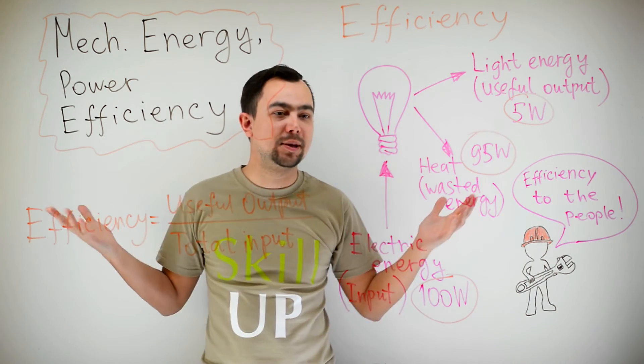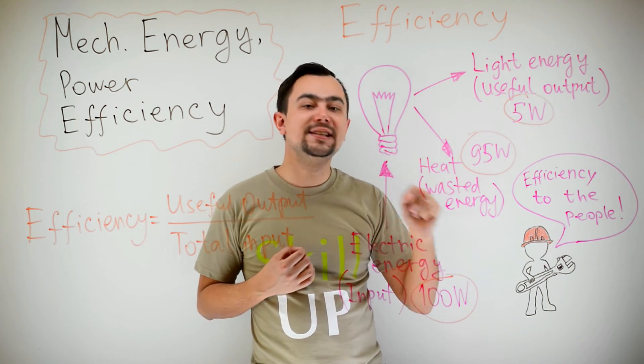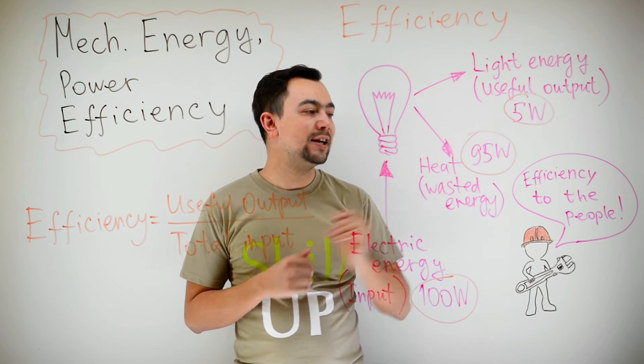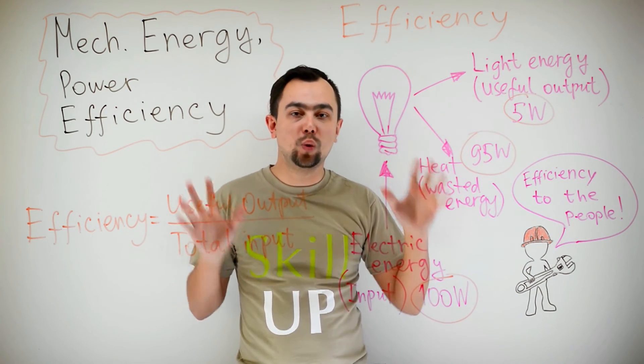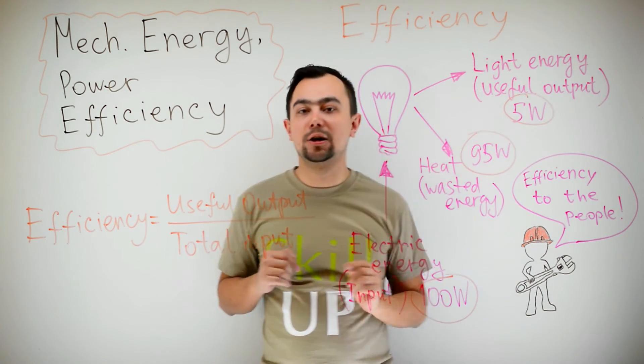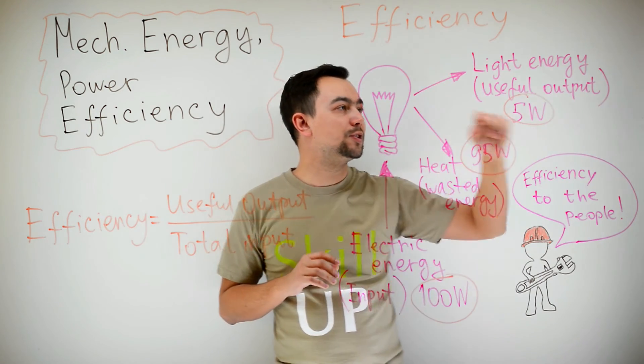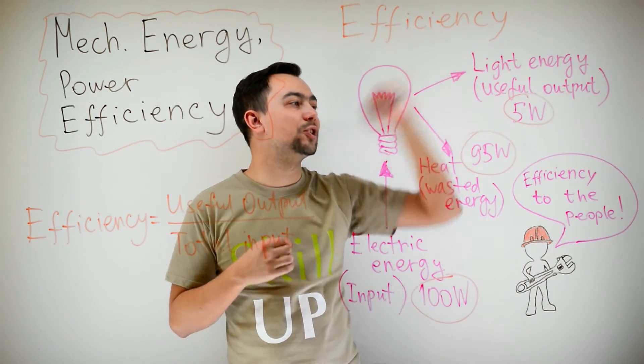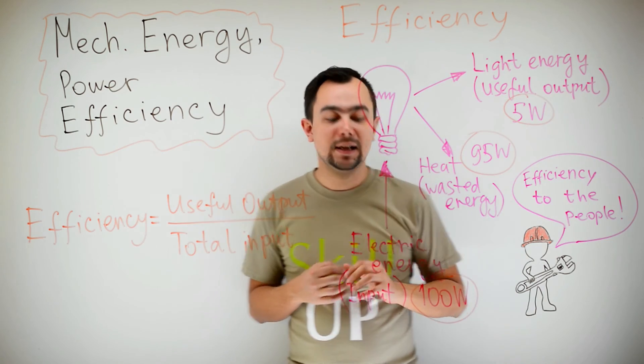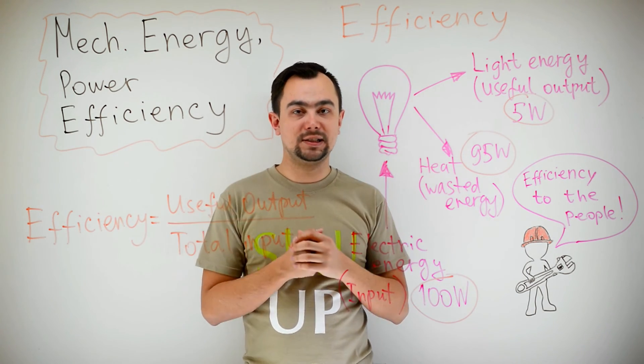We don't really use it to heat something up. So, we refer to heat as wasted energy, and that's about 95 watts of waste. The useful output is just about 5 watts. The useful light energy is 5 watts. So, we can say that this light bulb is only 5% efficient.